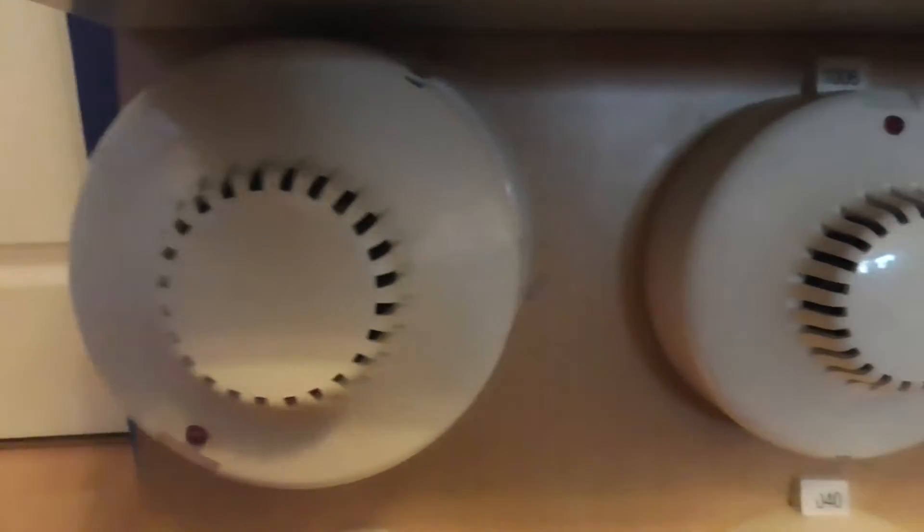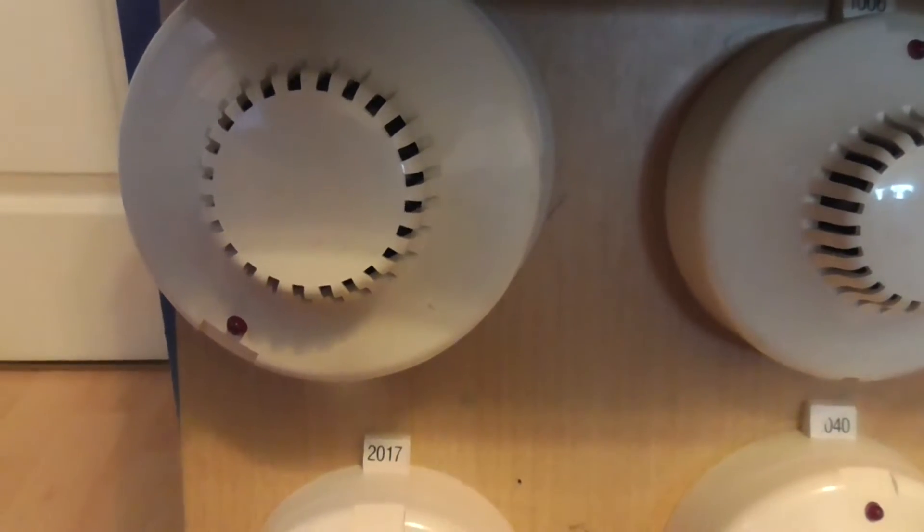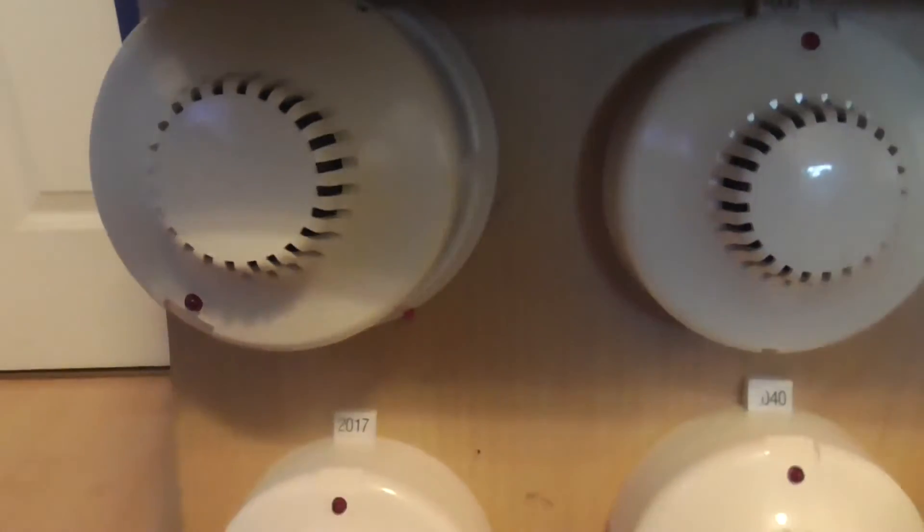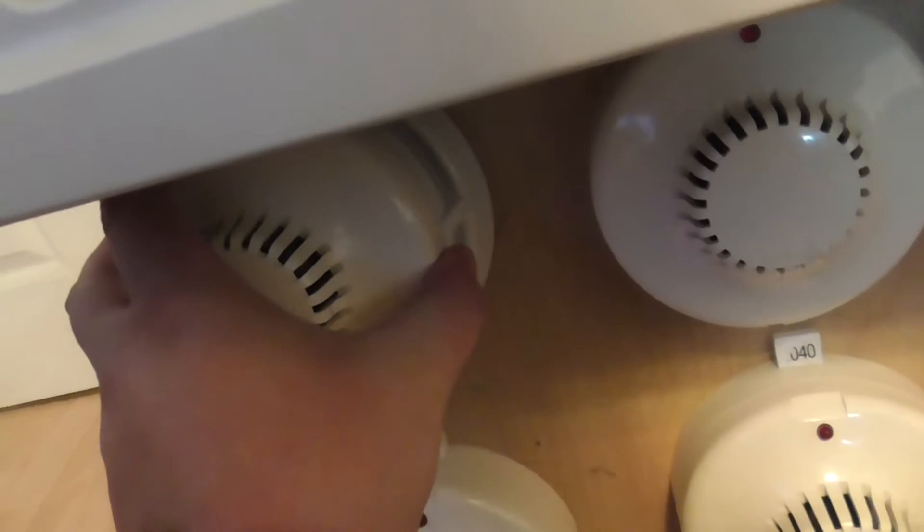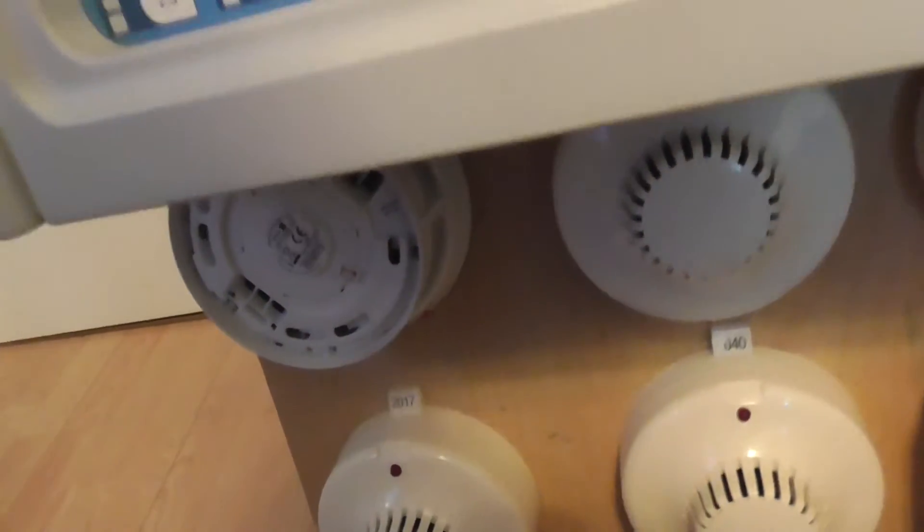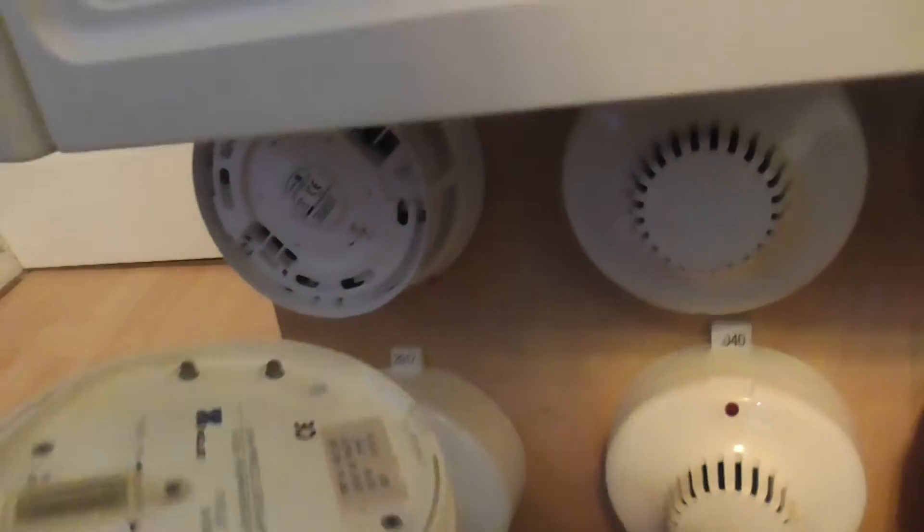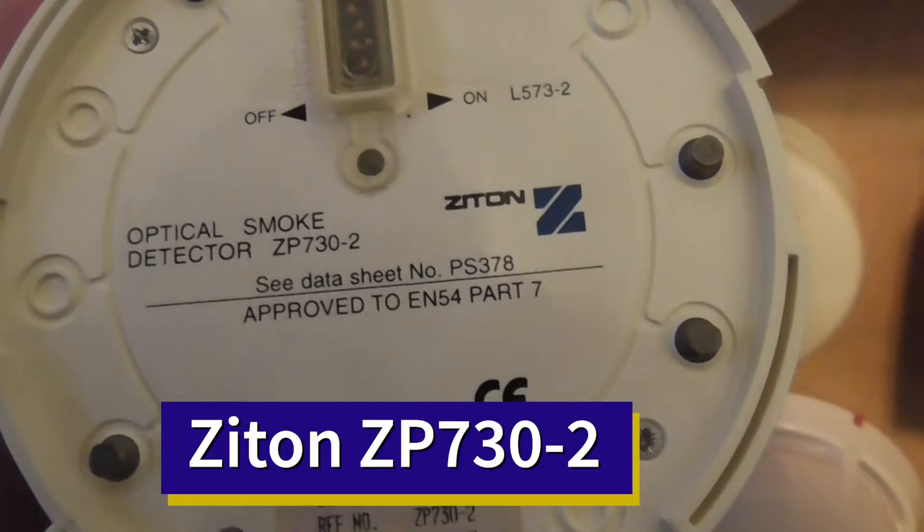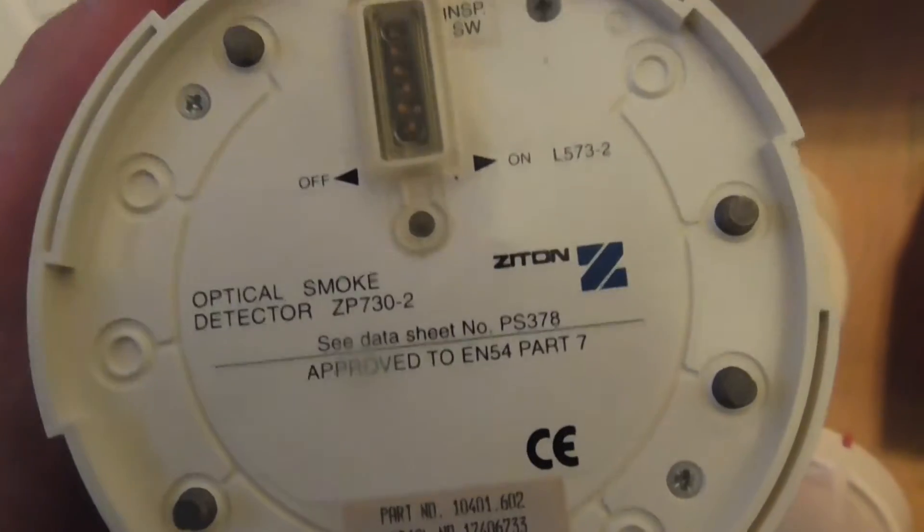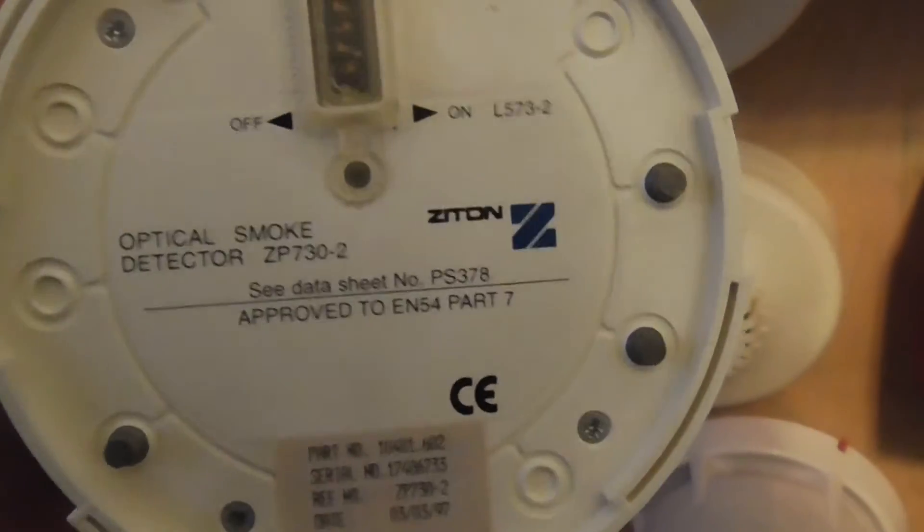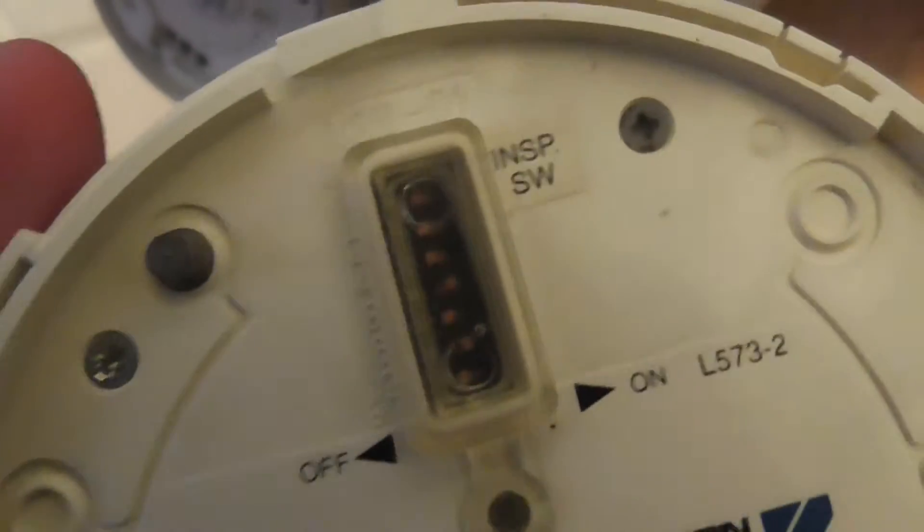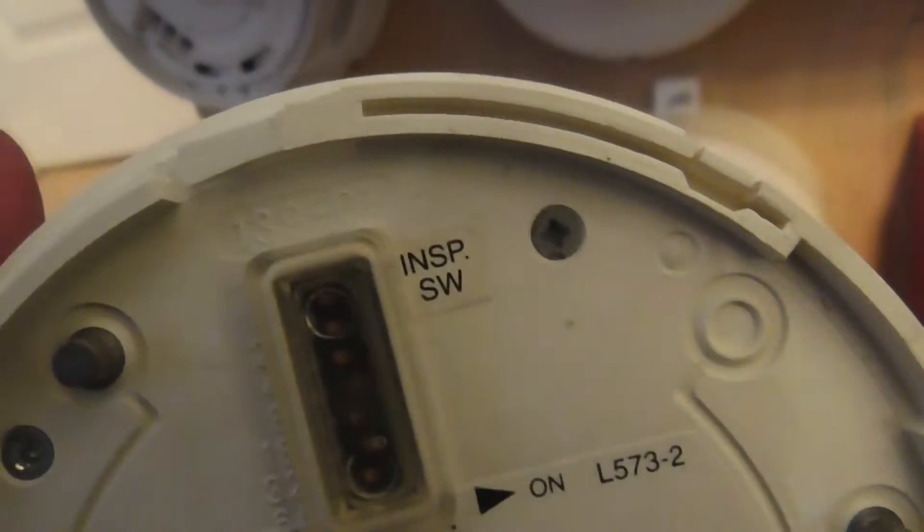So the first device we have is a Zyton ZP2. I don't remember the model numbers so I'll put them on the screen. I might actually be able to take these off the base and show you. This one here we've got a Zyton optical smoke detector ZP730-2. And then over here we have the DIL switches to set the address for the detector. All of them have DIL switches.